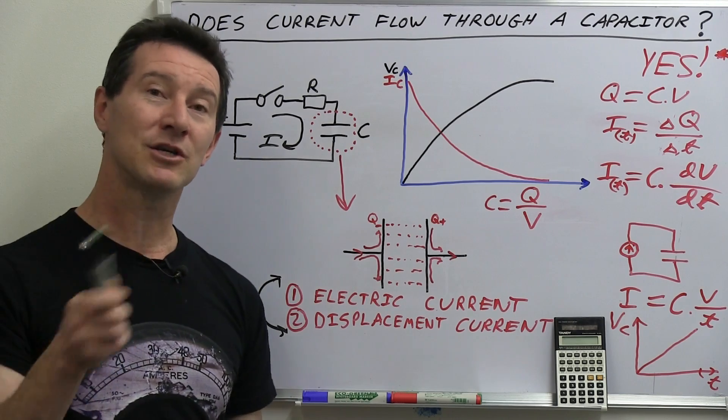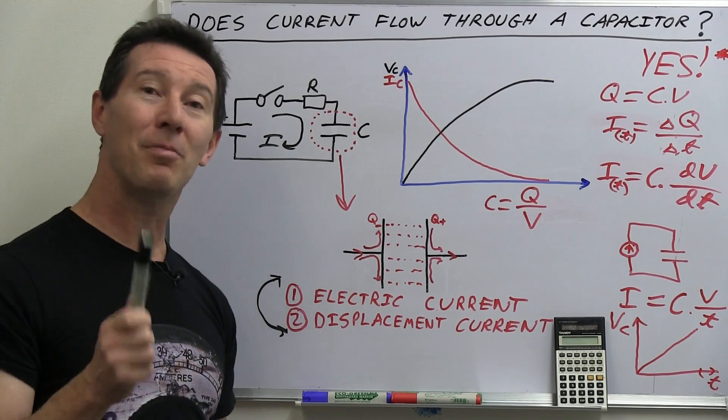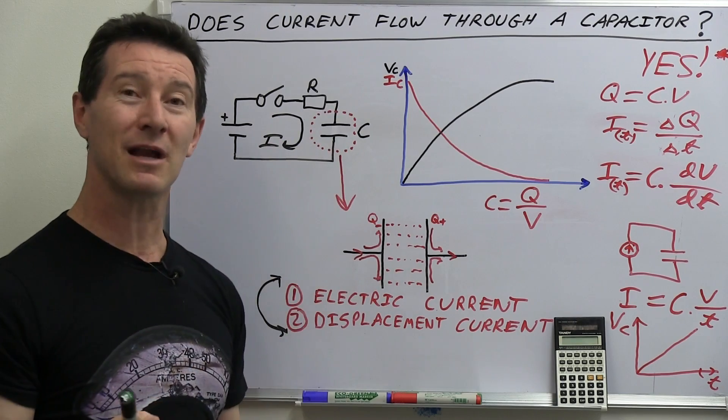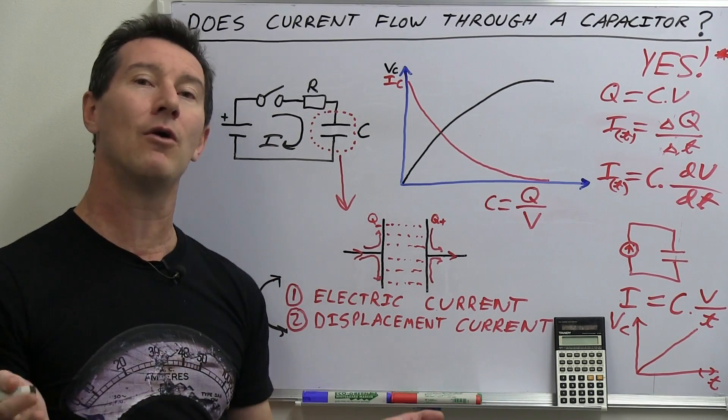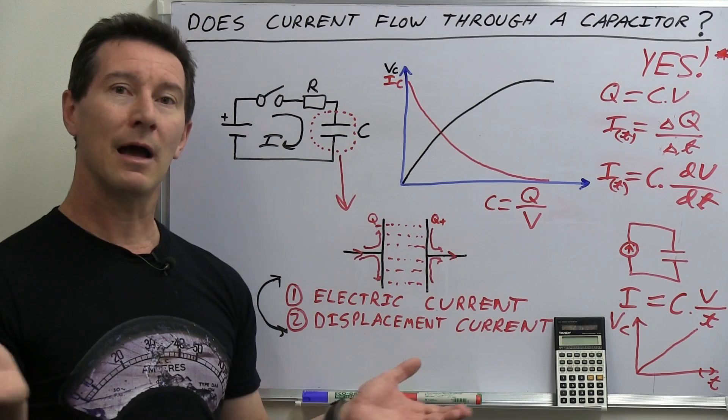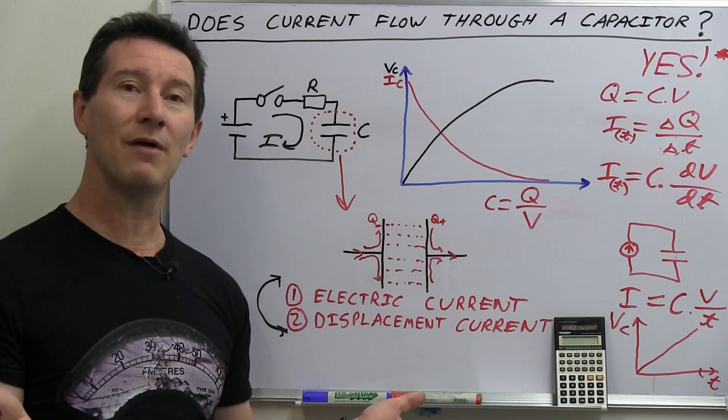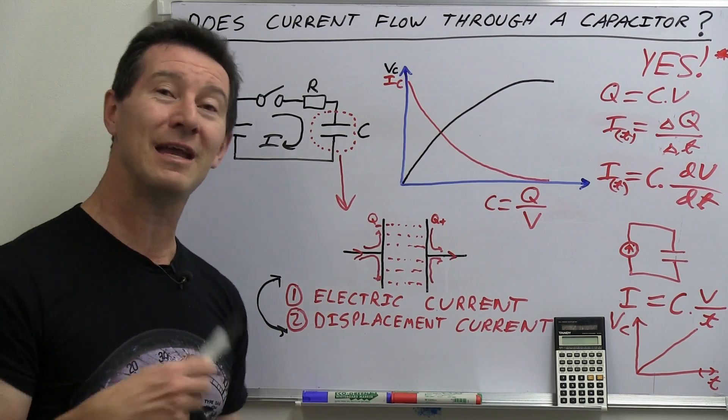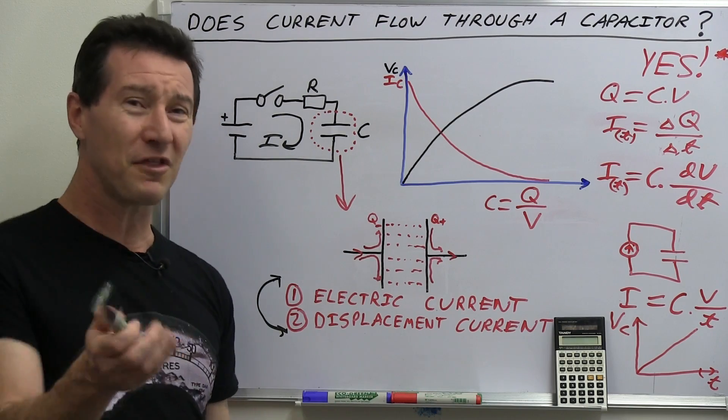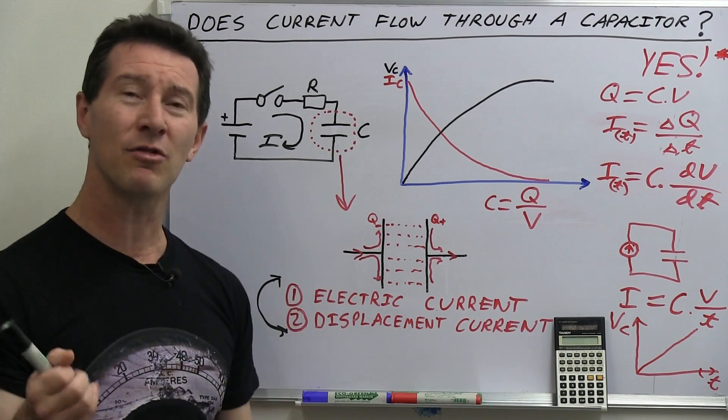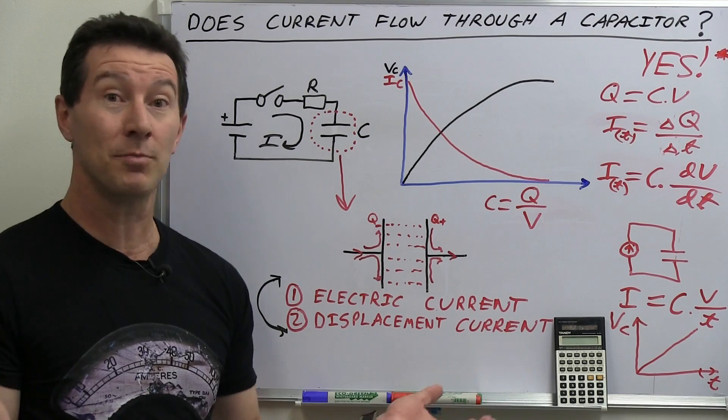To say somebody's wrong by, no, current doesn't flow through a capacitor is just crazy. It's of no practical value whatsoever. Try and design any practical electronics by thinking that current doesn't flow through a capacitor. It's just stupid. It doesn't work.